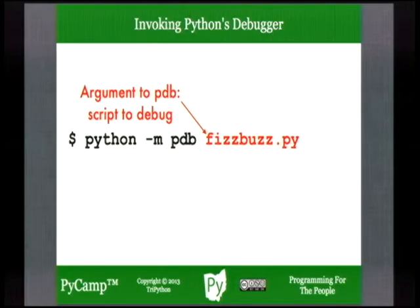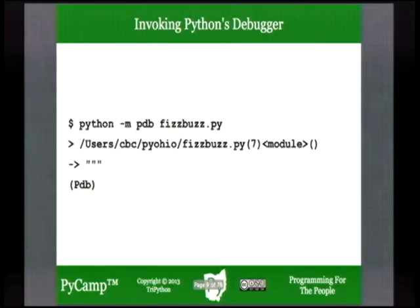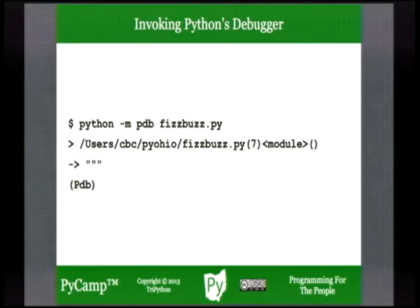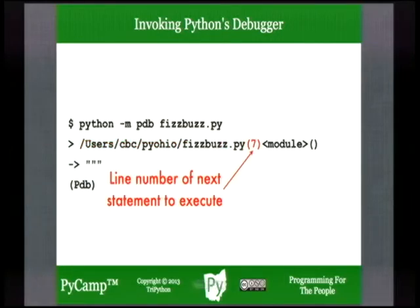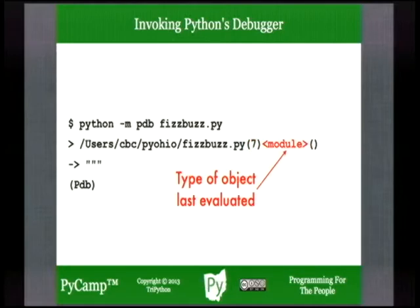This is an interactive tutorial, so we expect you to play along. Once we do that, the PDB module will show us several things. You should see a console with about three lines after your invocation of PDB with the script to debug. You will see a full path to the script being debugged, the line number of the next statement to execute, and the type of object last evaluated. When you use PDB to debug a script, that will be 'module' because Python has loaded the PDB module.